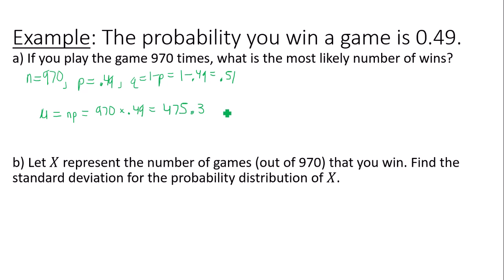Now find the standard deviation. Sigma is our standard deviation, and the formula is square root of n times p times q: square root of 970 times 0.49 times 0.51. So that is square root of 242.403, which gives you 15.57. So the standard deviation would be 15.57 or about 16 games.